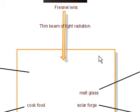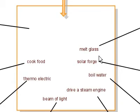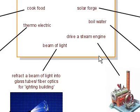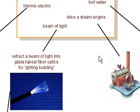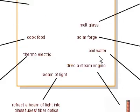Fresnel lens, thin beam of light radiation. With that, you could perhaps cook food, power a thermoelectric device, create beam of light that would then be transferred into fiber optics for lighting houses.